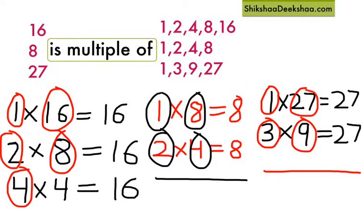So you can see that every number is a multiple of 1 and itself.